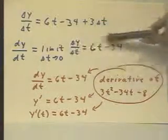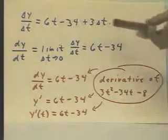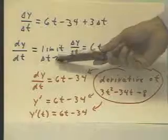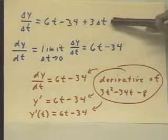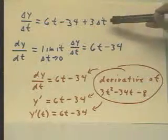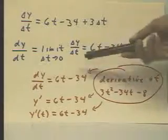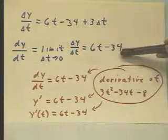That's for any t and any delta t, so we can find the average rate between any two clock times. We take the limit as delta t goes to 0 of delta y over delta t, letting delta t shrink away, and it's clear that when delta t has shrunk away to nothing, we have the expression 6t minus 34.